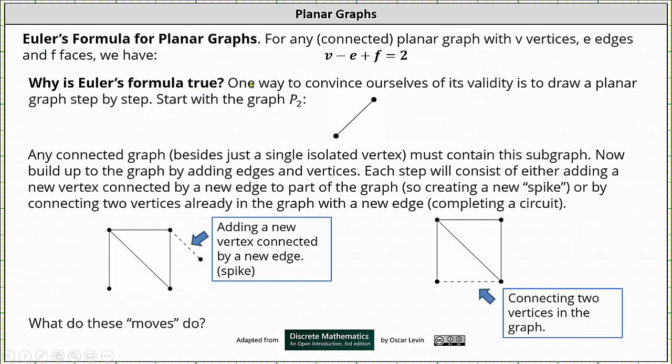Why is Euler's formula true? One way to convince ourselves of its validity is to draw a planar graph step by step, starting with the graph of p2 shown here below, where we have two vertices connected by one edge. Any connected graph besides just a single isolated vertex must contain this subgraph. Now, build up the graph by adding edges and vertices. Each step will consist of either adding a new vertex connected by a new edge to part of the graph, which we'll call a spike, or by connecting two vertices already in the graph with a new edge.